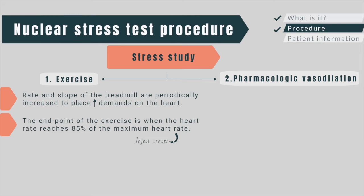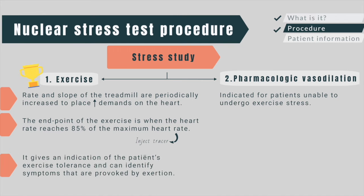An alternative method, pharmacologic vasodilation, is indicated for patients who are unable to exercise. However, exercise stress testing is the preferred choice because it also gives you an indication of the patient's exercise tolerance and can identify symptoms that are provoked by exertion, such as chest pain, dyspnea, and lightheadedness.